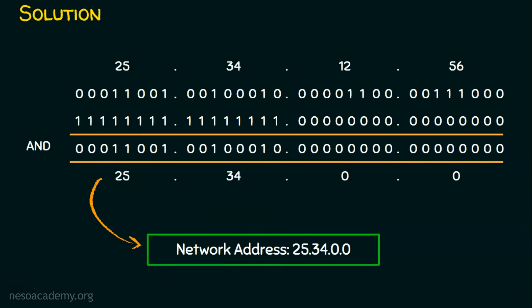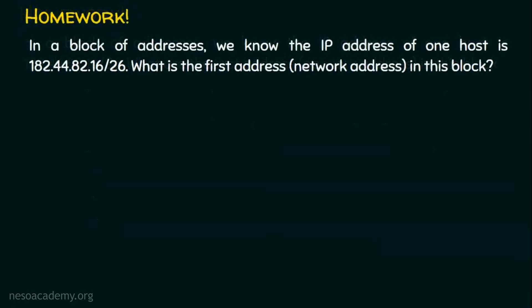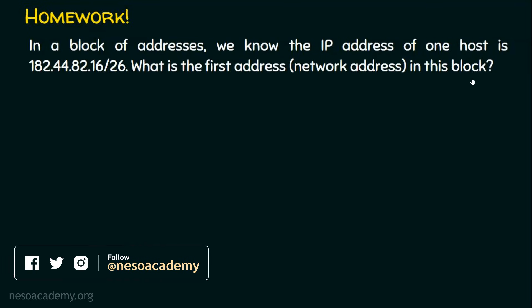I hope you now know how to find the network address of a given network. You can use either of the two methods: the reverse engineering method or the AND operation method. Before we sign off, here is the homework question: In a block of addresses, the IP address of one host is 182.44.82.16/26. What is the first address — that is, the network address — in this block? I recommend you use the AND operation method as it is the simplest.